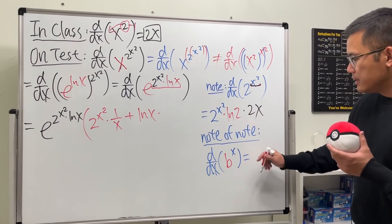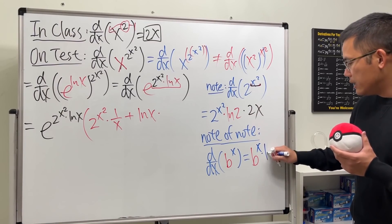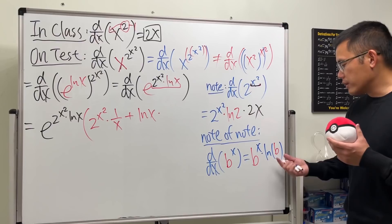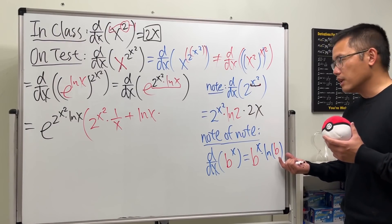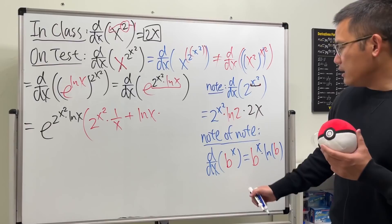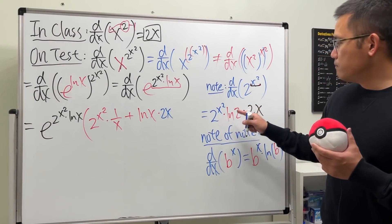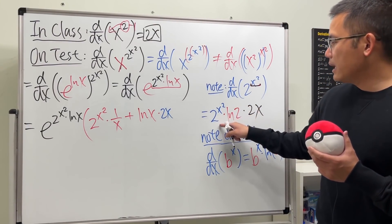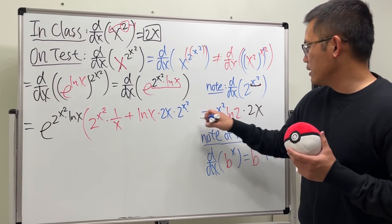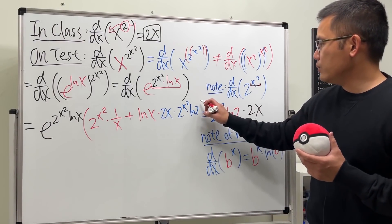The reason we multiply by ln 2 is due to the general formula: when we differentiate b^x, the derivative is b^x · ln b. I've done a separate video on why this formula holds for exponential functions. So here the derivative of 2^(x²) is 2^(x²) · ln 2 · 2x. I'll put down 2x first for clarity, then multiply by 2^(x²) · ln 2.